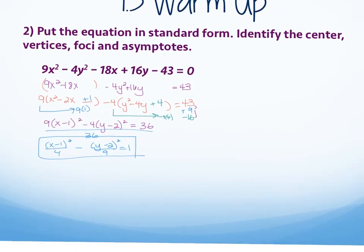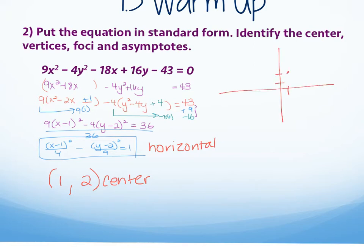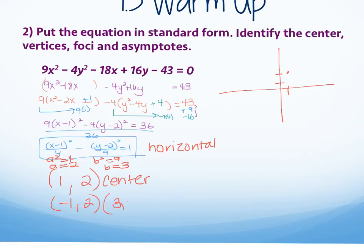Dividing by 36 gives x minus 1 squared over 4 minus y minus 2 squared over 9 equals 1. That's the hyperbola in standard form. Now I need the center, vertices, foci, and asymptotes. The center is the opposite of what follows x and y, so it's 1, 2. This is horizontal because the x term comes first, so I go right and left by a. Since a squared is 4, a is 2.